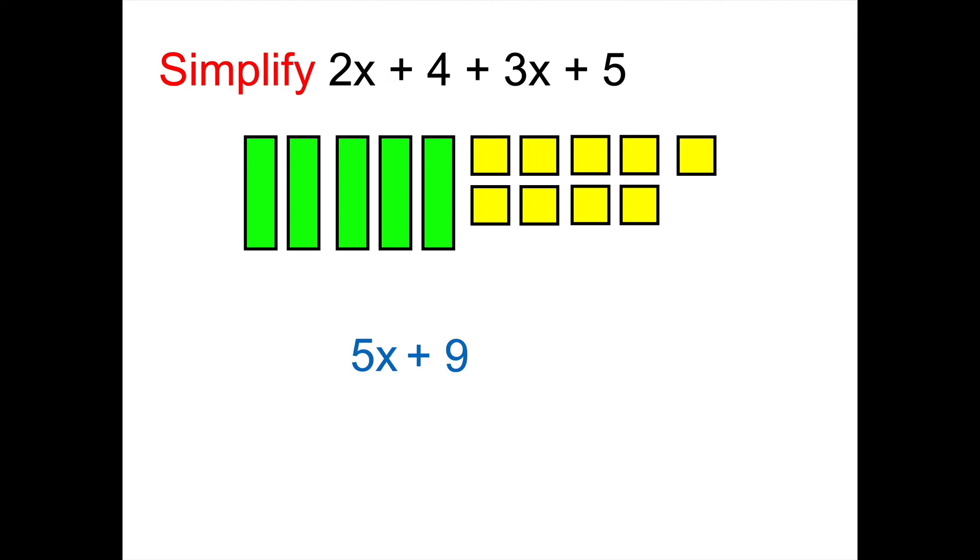So why do we not jumble things together and say 14? Because there are different kinds of things. You can see by looking at them, just like apples and bananas are different. My x tiles and my 1 tiles are different.